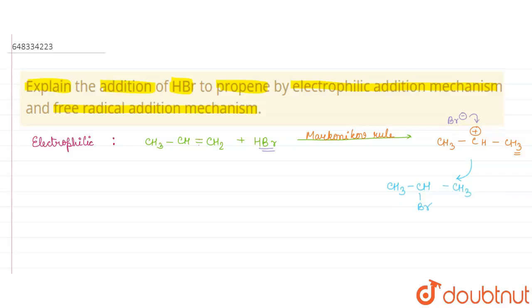From this we get the formation of CH₃CHBrCH₃. This is more stable, and that's why this product is formed — the Br is added at the secondary carbon position.